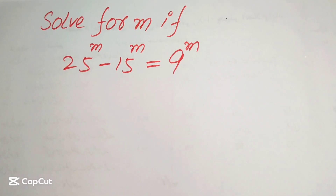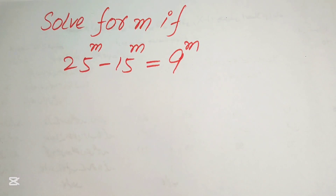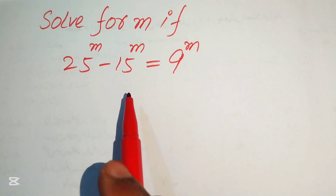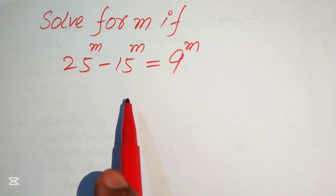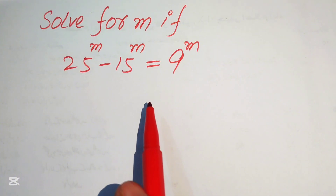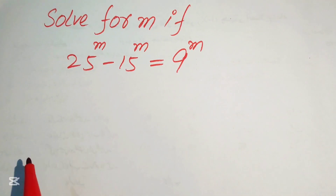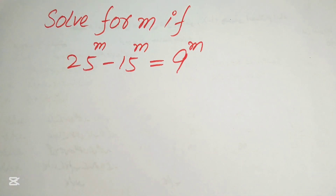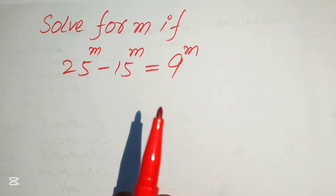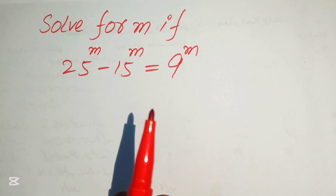Hello everyone, welcome. We are going to solve this nice math algebra problem. Here we have 25 to the power of m minus 15 to the power of m equals 9 to the power of m, and we need to solve this problem for the values of m.